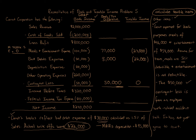Depreciation is another challenging item. MACRS depreciation for tax purposes is $95,000, while book depreciation is $80,000. So the taxable income column gets $95,000, and the book-to-tax difference is negative $15,000. This is a classic temporary difference — for book purposes we almost always use straight-line depreciation, while for tax purposes many assets use double-declining balance. The numbers differ each year, but over time the total depreciation for each asset will be the same.